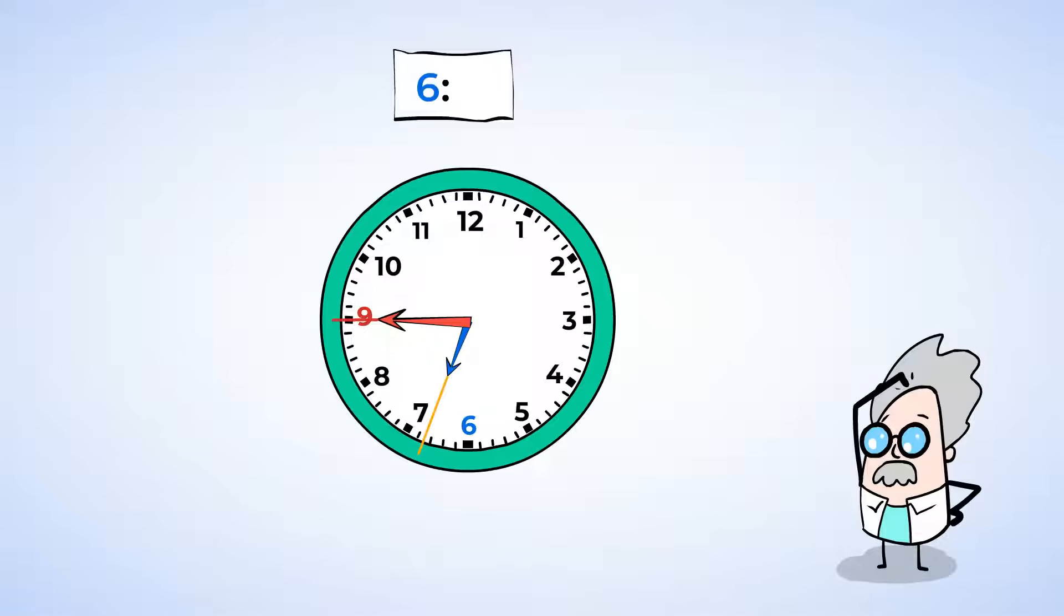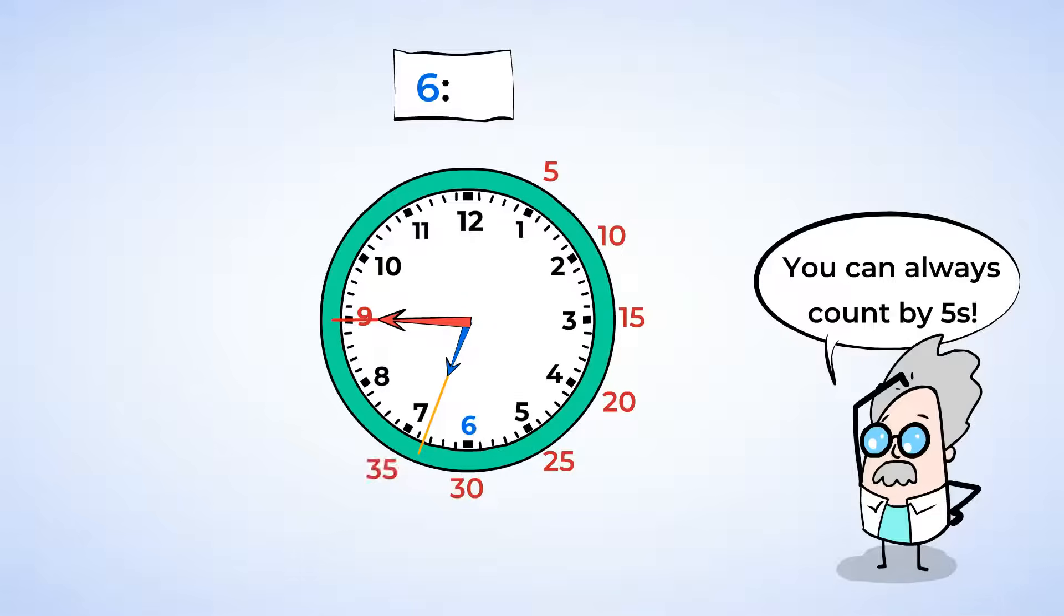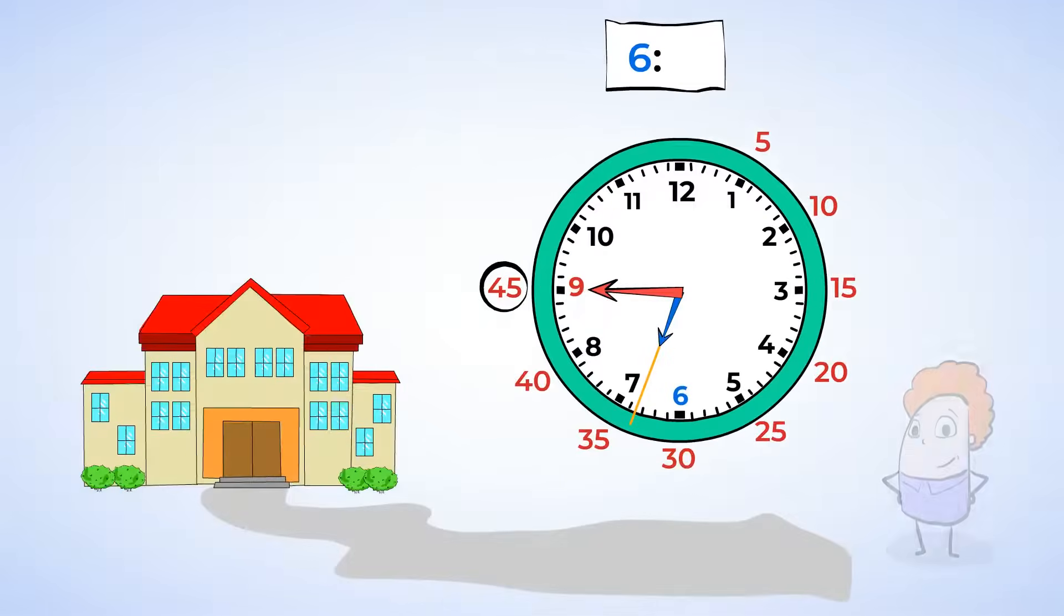Now, you might remember how many minutes 9 represents. But if you don't, you can always count by fives. So let's do that. Starting from number 1 on the clock, we have 5, 10, 15, 20, 25, 30, 35, 40, 45. So Eric gets up at 6:45 for school.